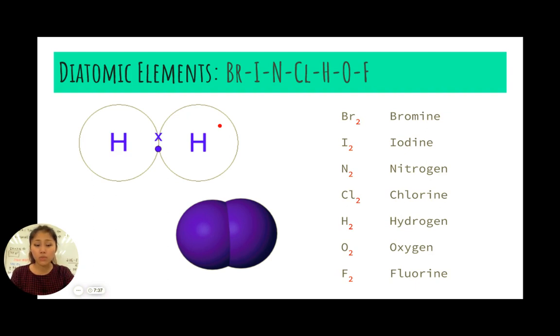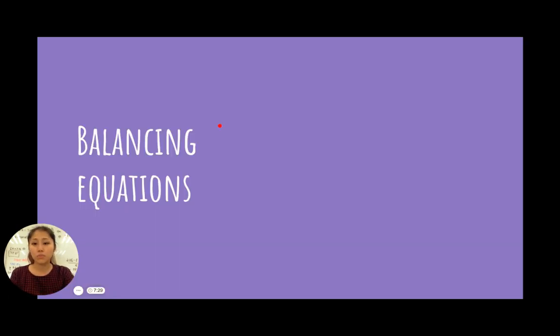You can draw the same electron diagrams for the other six elements to show that they are more stable as diatomic elements in pairs. When we balance equations, we need to be wary of which elements are diatomic so that we're writing our balance equations correctly.